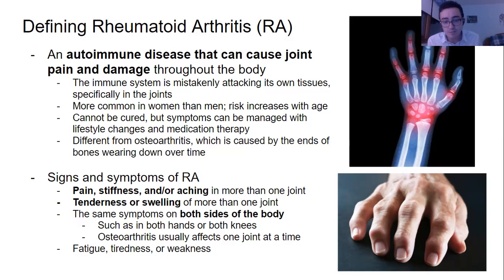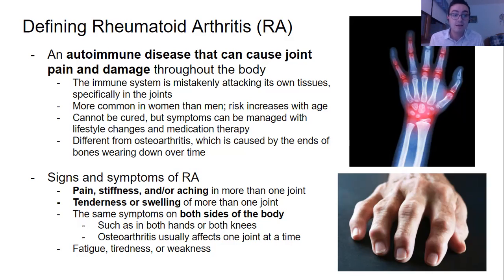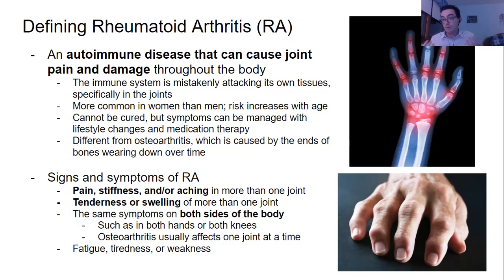Signs and symptoms of RA include pain, stiffness, or aching of more than one joint — that's the key, more than one joint. There's also tenderness or swelling of more than one joint, it occurs on both sides of the body, both hands and both knees, as well as causing fatigue, tiredness, or weakness.